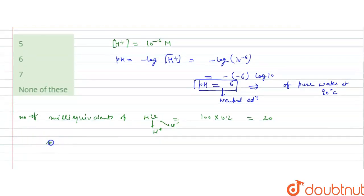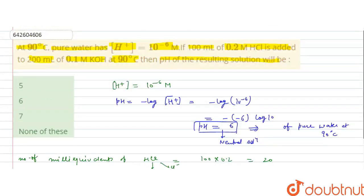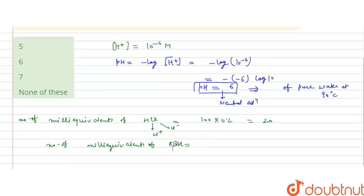Similarly, the number of milliequivalents of KOH will be the volume that is 200 ml and concentration is 0.1 molar. So this also gives us 20. It means this will give us K positive and OH minus ions, so number of equivalents of OH minus also equal to 20.